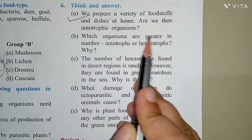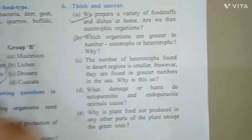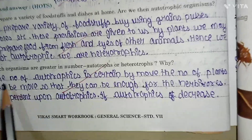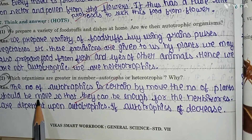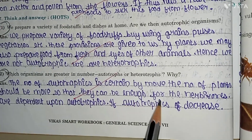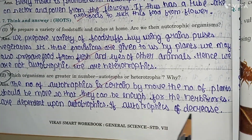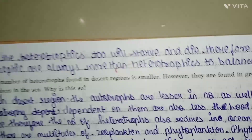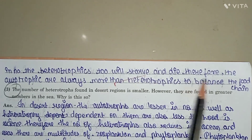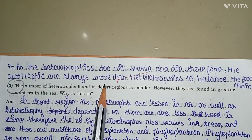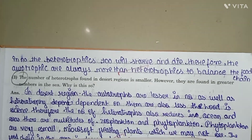Second question: which organisms are greater in number — autotrophs or heterotrophs, and why? Autotrophs are always more in number than heterotrophs. The number of plants must be large enough so that herbivores dependent on autotrophs can have enough food. If autotrophs decrease in number, heterotrophs will starve and die. Therefore, autotrophs are always more than heterotrophs to balance the food chain, because the food chain starts from plants.